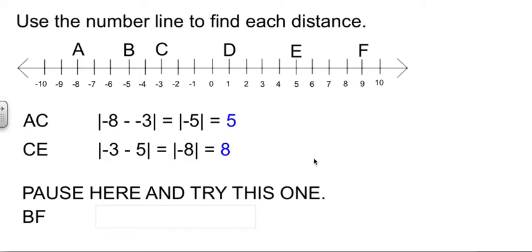So I'm going to ask you to pause here and try this one: find the distance from B to F, and then come back and check your answer. So B to F, negative 5 over to 9 is a distance of 14.